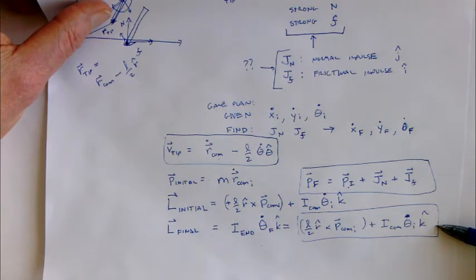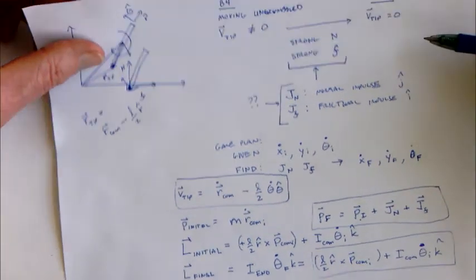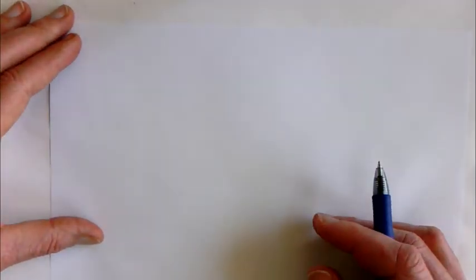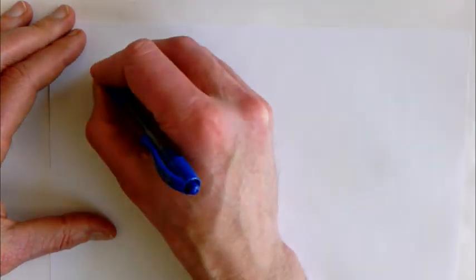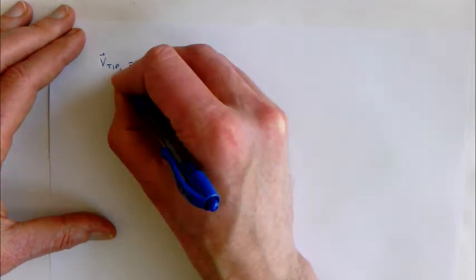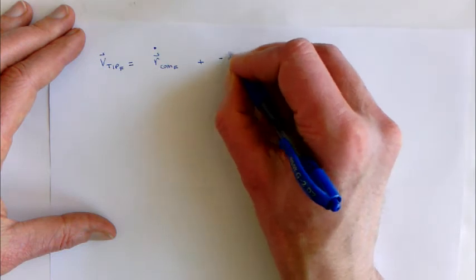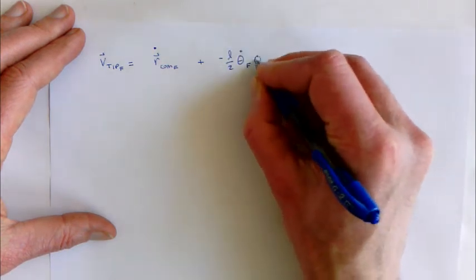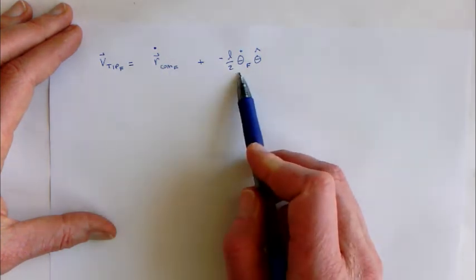So at this point we want to figure out what these impulses are. In order to do that, we apply the condition that the tip's velocity has to be zero at the end of the time when it lands. If we write the tip's velocity out in terms of the final velocity of the center of mass, the final tip velocity will be the final velocity of the center of mass plus (±L/2) times θ_final times θ-hat, and that has to be zero.